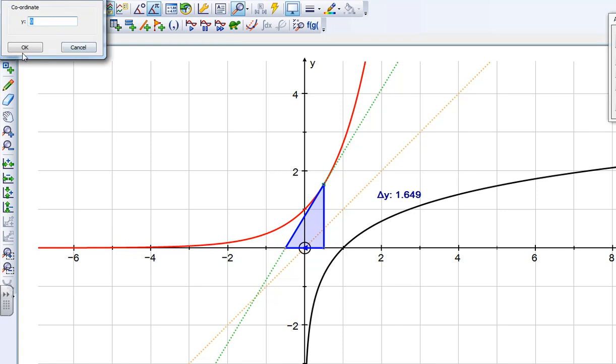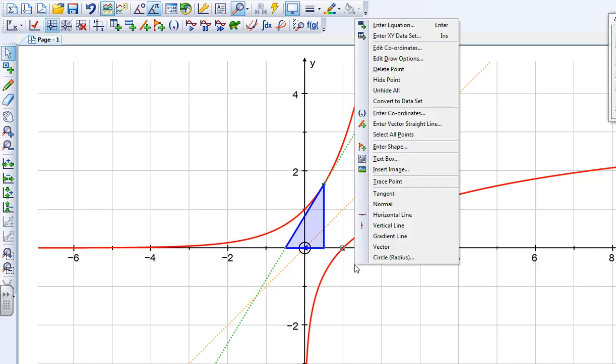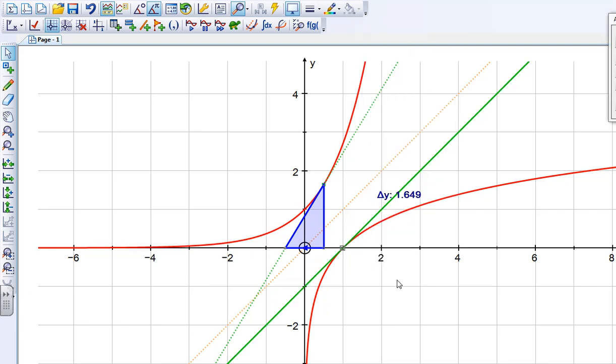it doesn't matter where I put it, so I'll just leave it as y is zero, and then selecting that point, if I right click, I can put in the tangent.